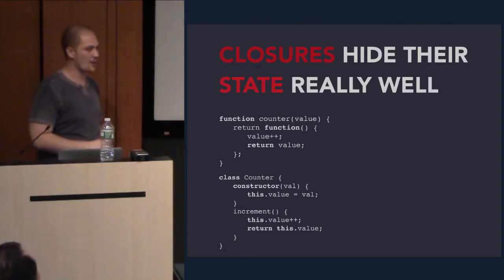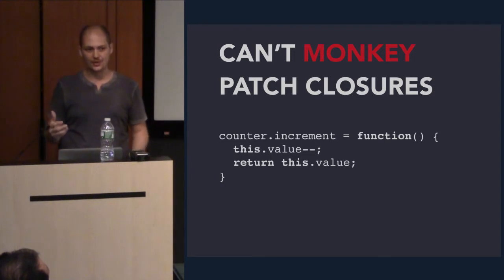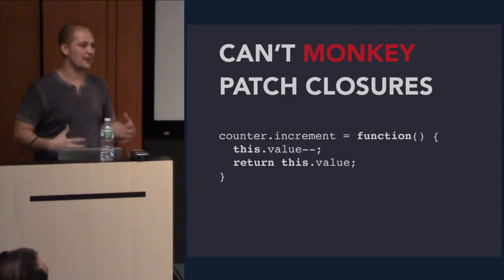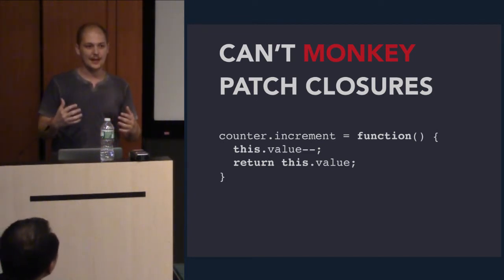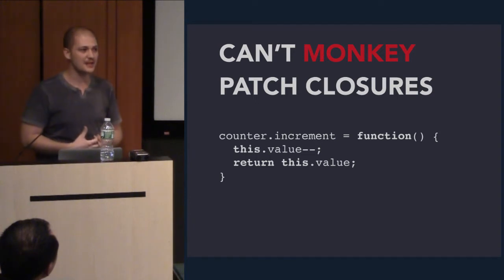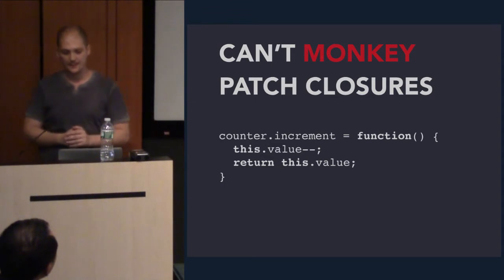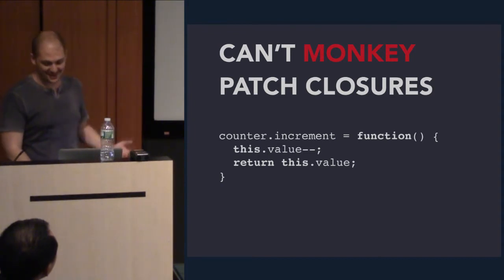Another problem with using functions as the basic unit of abstraction is that you can't really monkey-patch closures. In production, you don't want to do that. But while you're debugging, it's definitely important to be able to change your classes and methods to do interesting things. Sometimes I actually change a method while debugging just to try out a new idea without going back to code — to iterate really fast. Here I'm changing increment to actually decrement. It's extremely contrived, but illustrates the point.